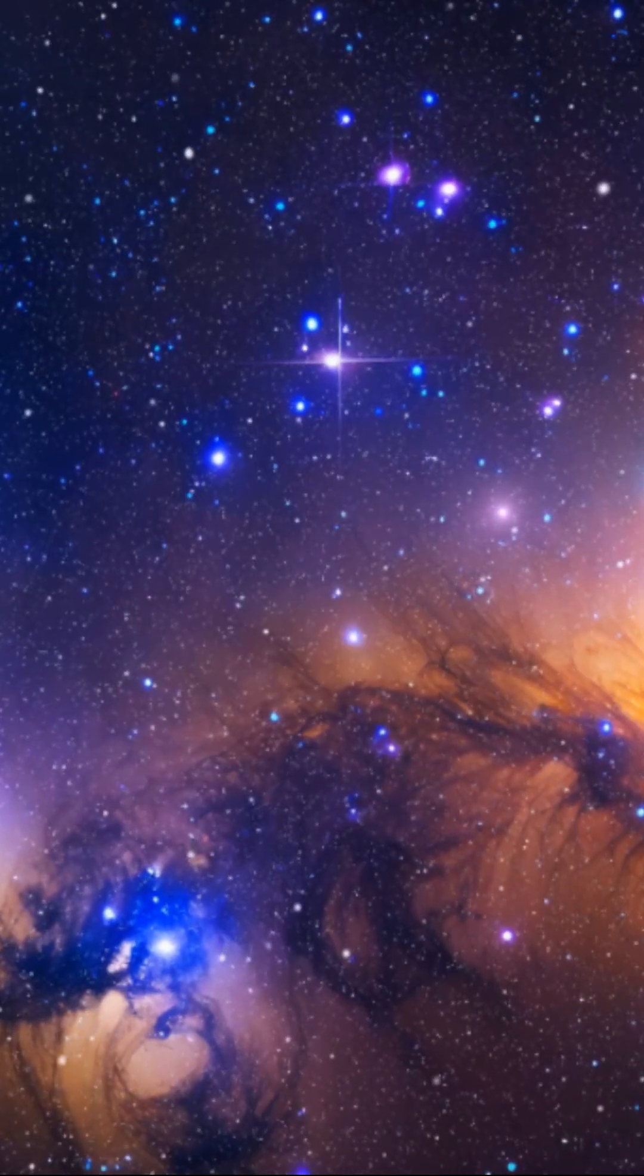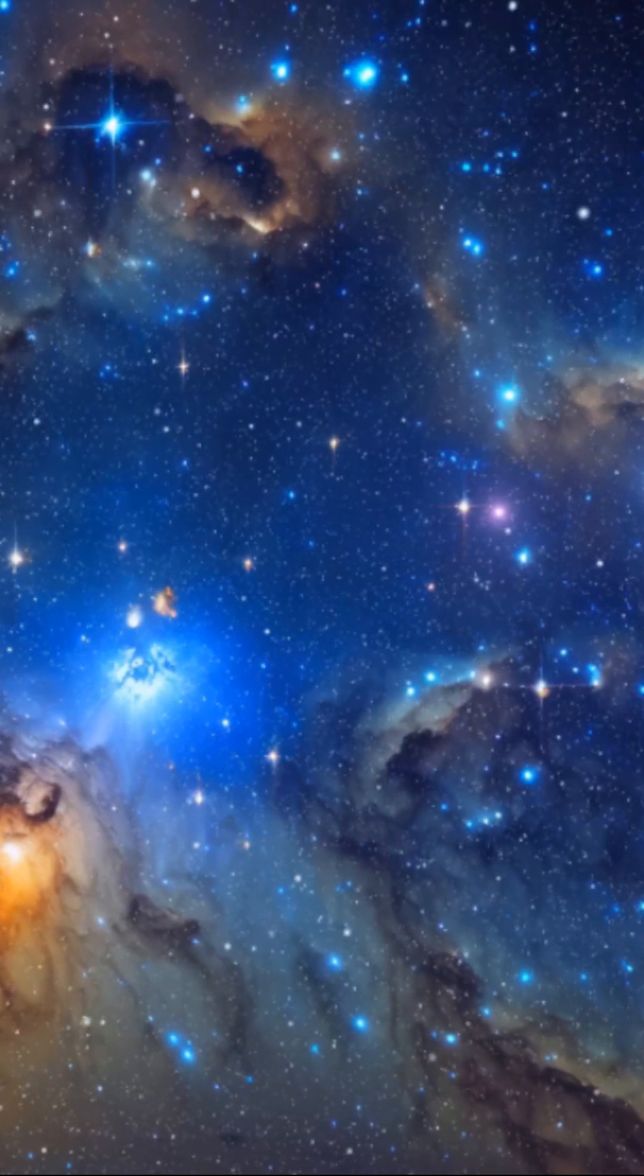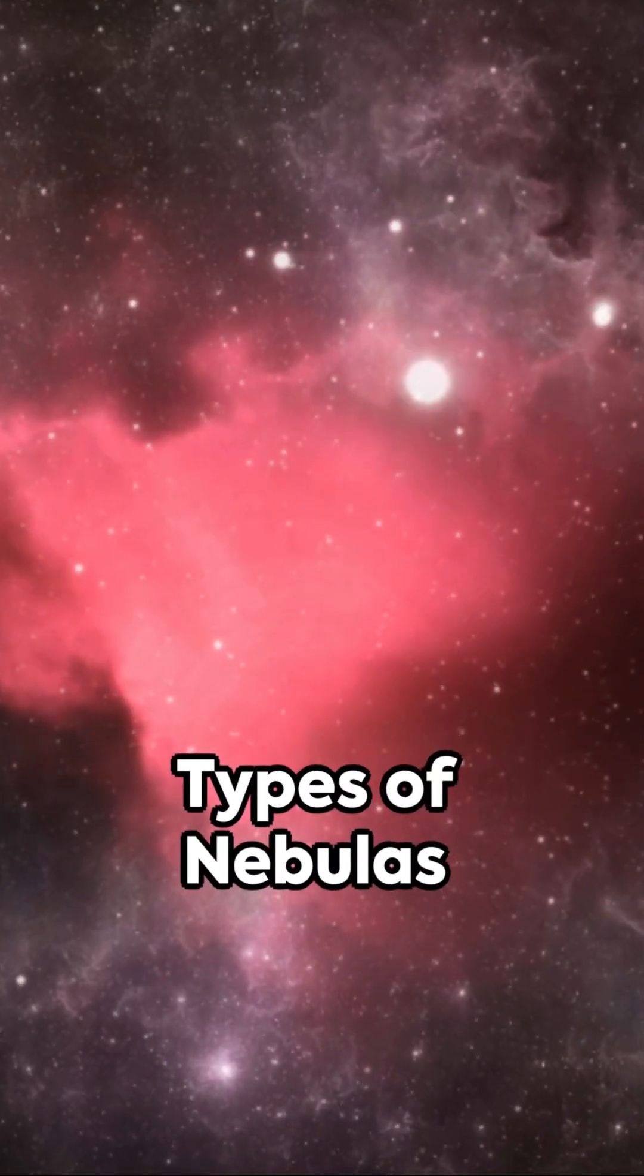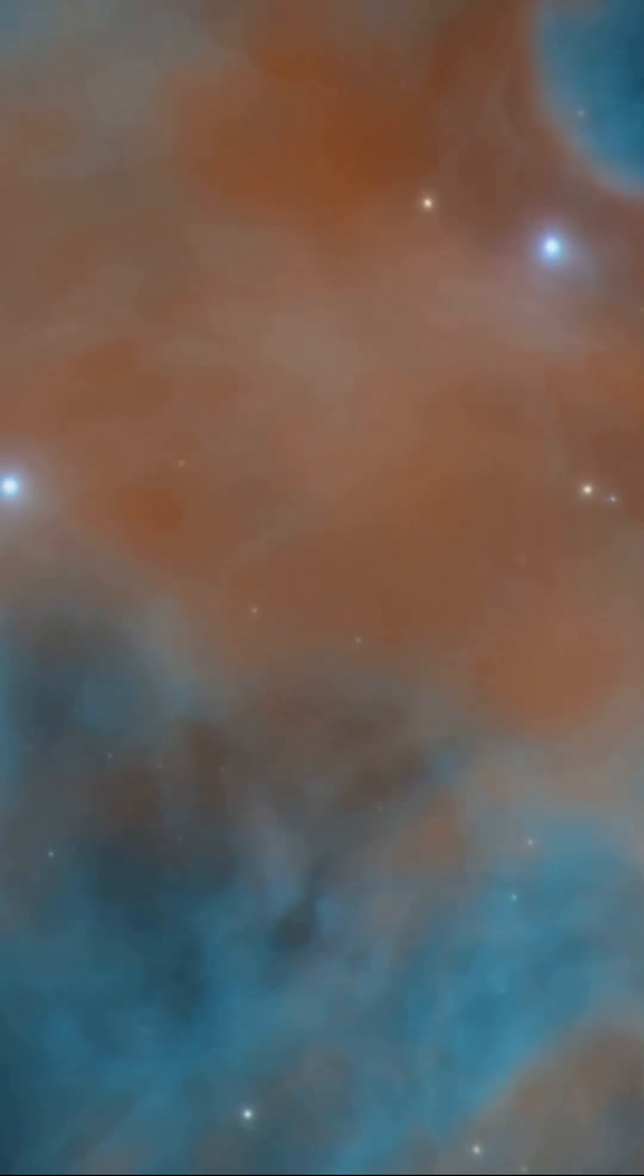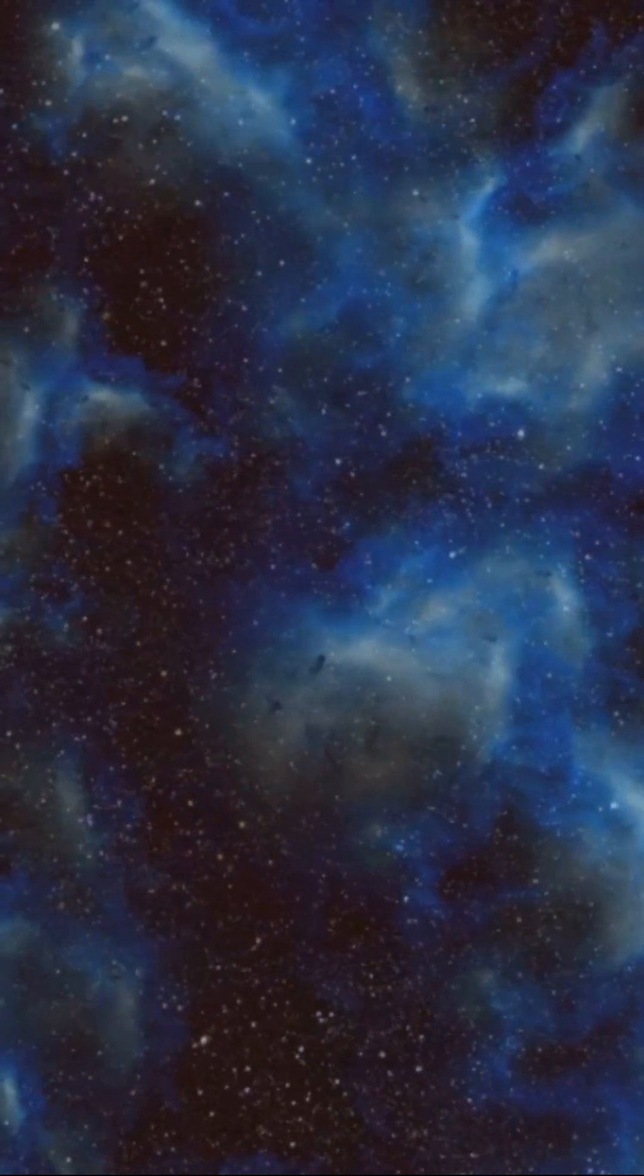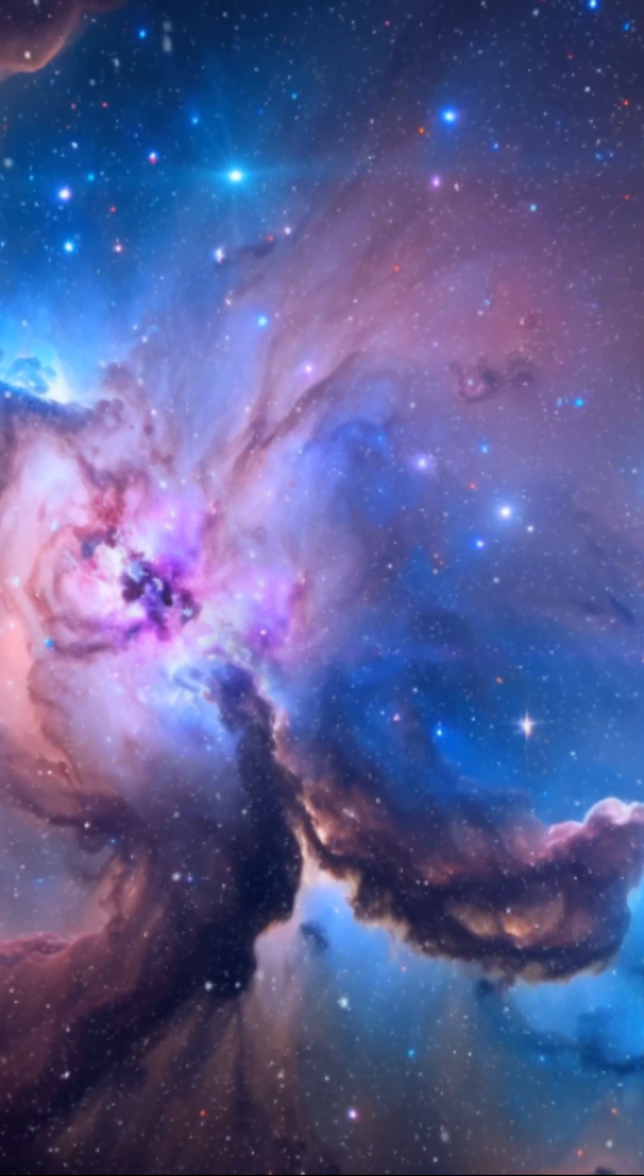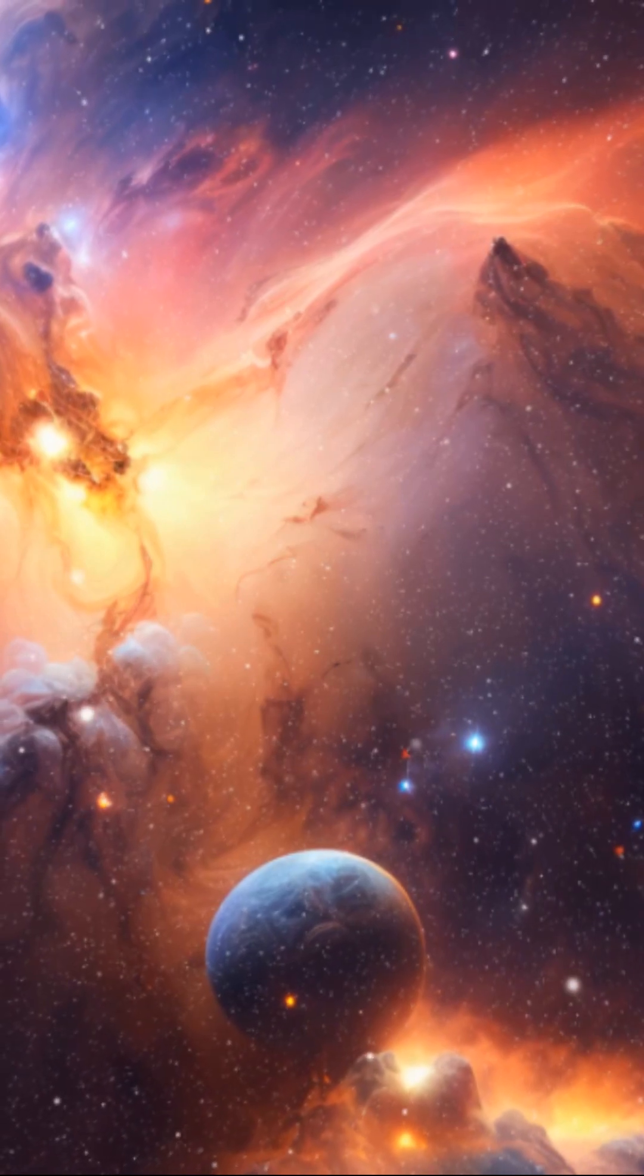Nebulas come in various shapes and sizes, including emission, reflection, and dark nebulas. Emission nebulas are often red or pink due to ionized hydrogen gas emitting light. Reflection nebulas appear blue because they reflect the light of nearby stars. Dark nebulas are dense clouds of dust that block light from passing through.